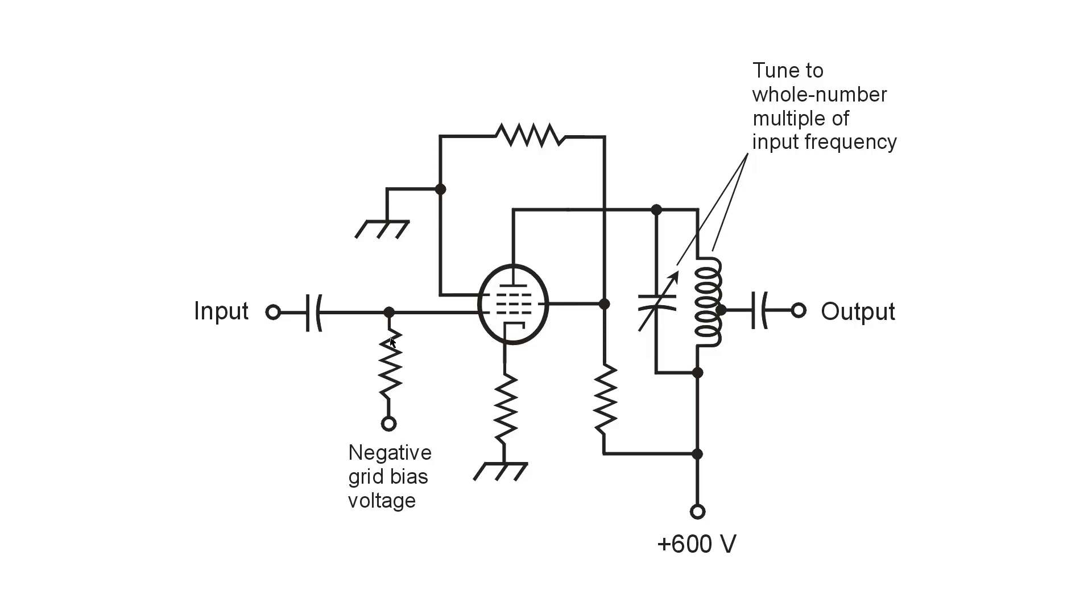That's the half of the cycle of the RF input cycle that has a positive voltage so that current can flow through the tube because the negative grid voltage is less than the cutoff voltage.